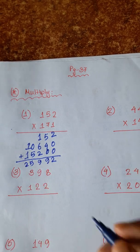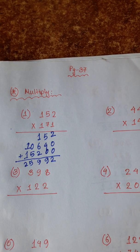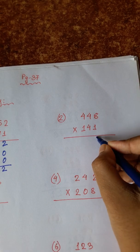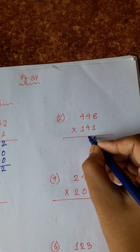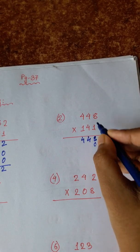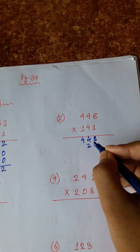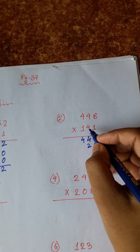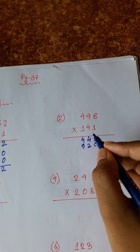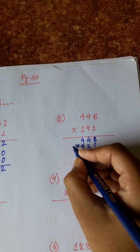Then 8-108, 4-104, 4-104. 8-4-32. 3, 4-4-16 plus 3, 19. 1, 4-4-16 plus 1, 17.